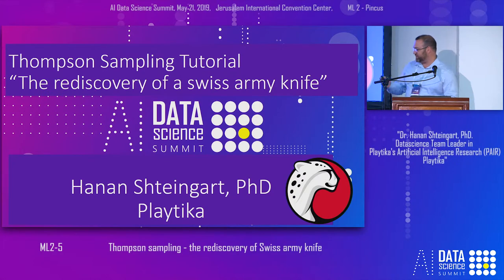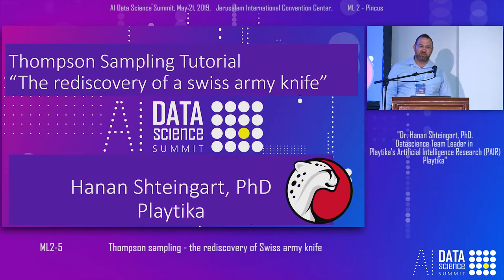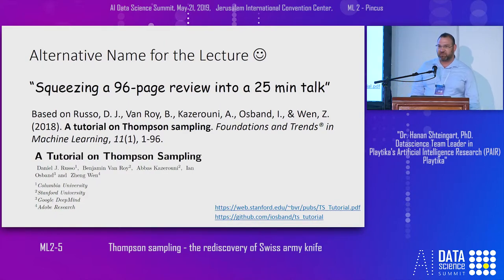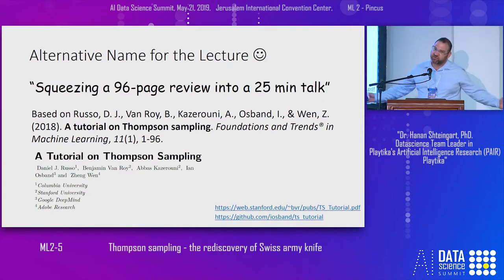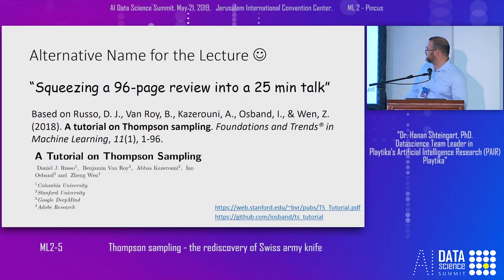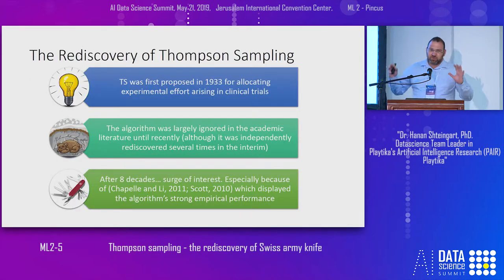This talk is about Thompson Sampling, something I called the Swiss army knife of machine learning because it's been used in so many places. A different name for my talk could be 'squeezing a 96-page long tutorial into 25 minutes.' This is of course an impossible task, but I hope I will give you some links and thoughts to take home and see whether you can use this amazing algorithm in your business.